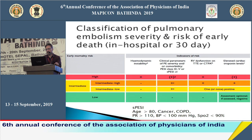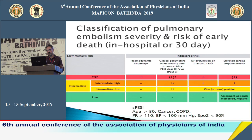A hemodynamically stable patient who has more than one sPESI risk factor, RV dysfunction on echo, and elevated biomarkers falls into the intermediate-high risk category. A patient who is hemodynamically stable with one or fewer sPESI risk factors and only one of echo/CT or biomarker positive is intermediate-low risk, with mortality less than one to two percent.